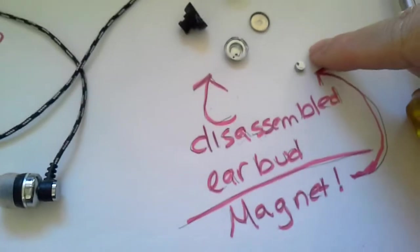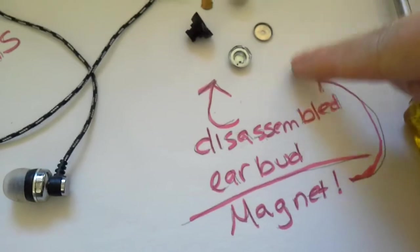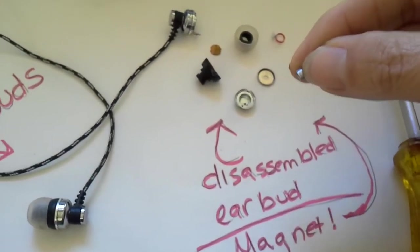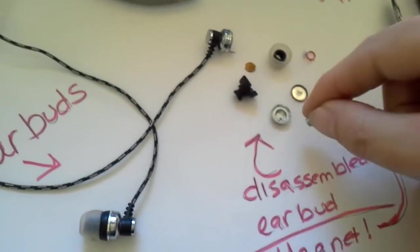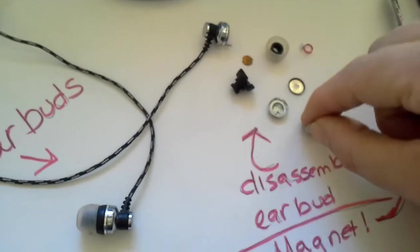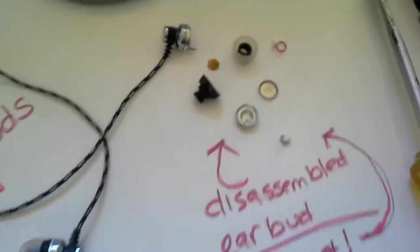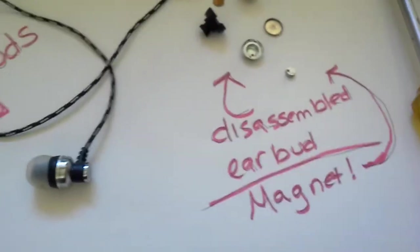So, disassemble the earbud. You will eventually get down to a magnet. And that, there is the money part. That's the part that you need to get. And you'll notice how tiny it is. Now, this magnet here is a little bigger than I prefer. When I say bigger, I mean thicker. Actually, the one I have in mine is real thin and round, and looks like a little tiny washer, and it's real thin. And I'll show you that in a minute.